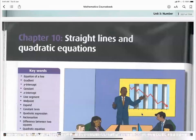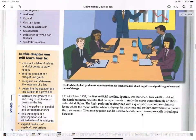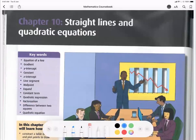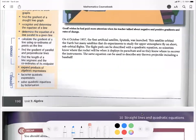Okay, chapter 10, straight lines and quadratic equations. So now we are going to draw something called a straight line. Straight line graphs show the relationship between the y-coordinate and the x-coordinate.